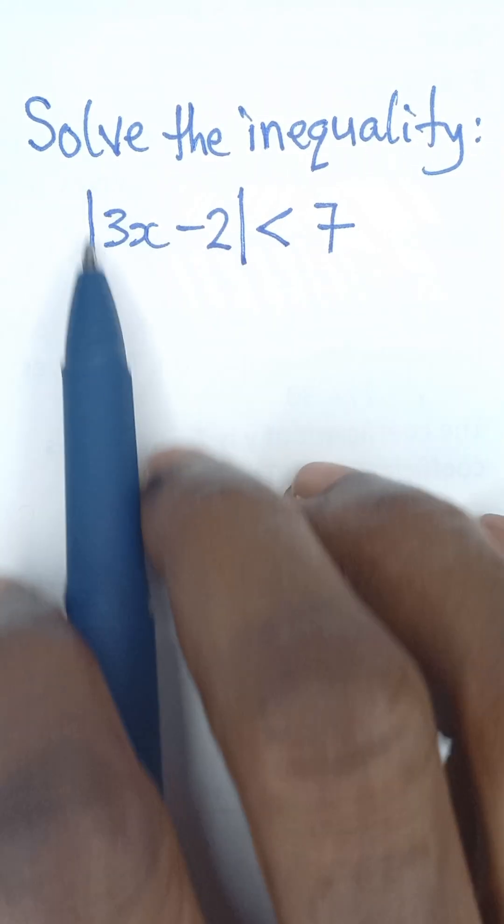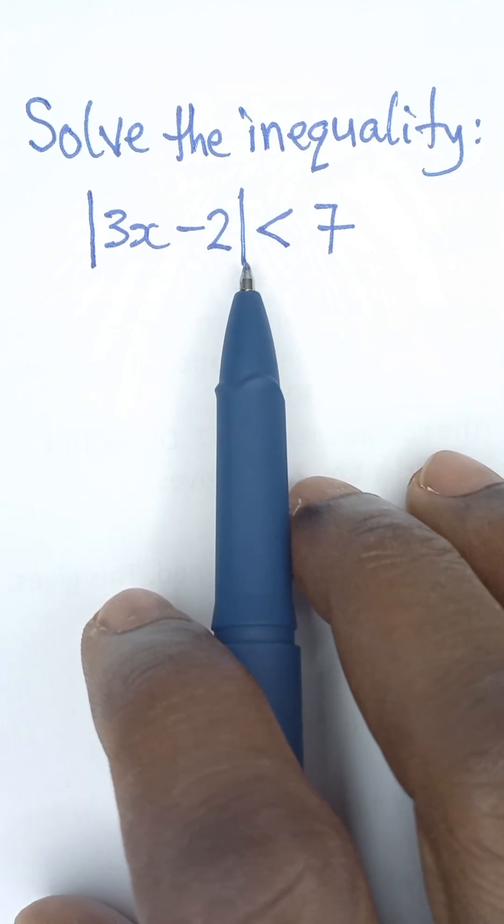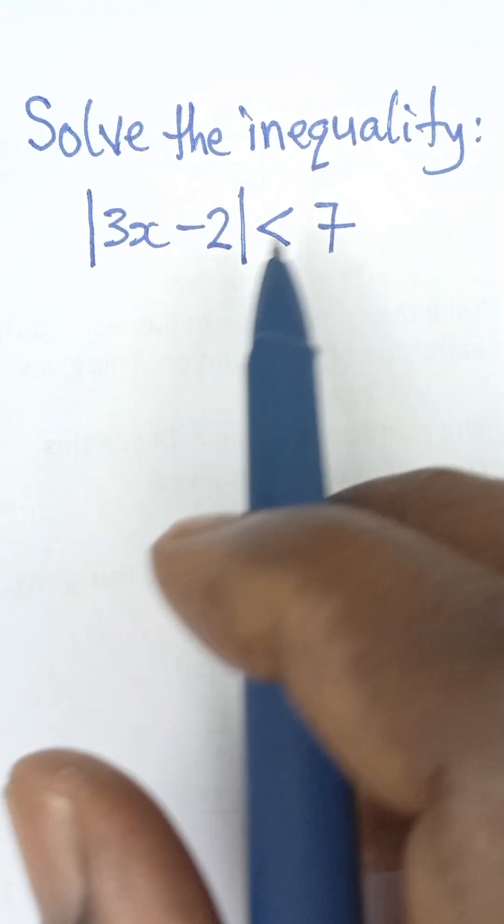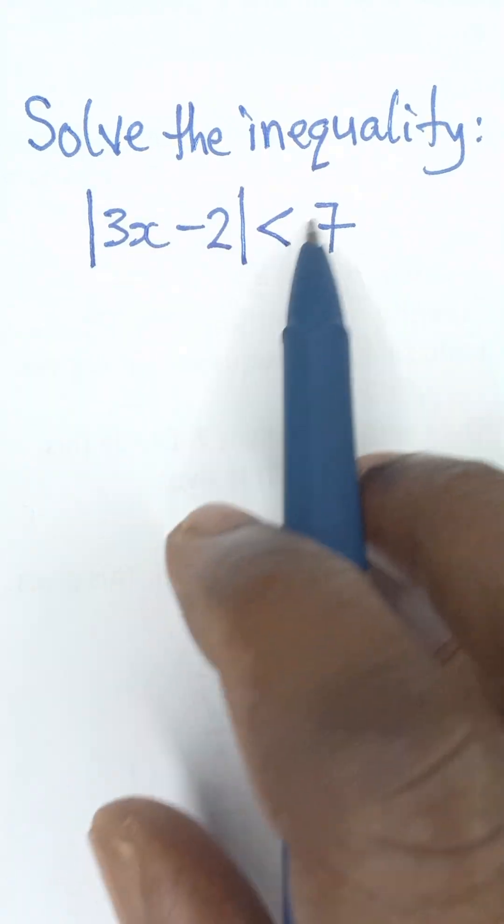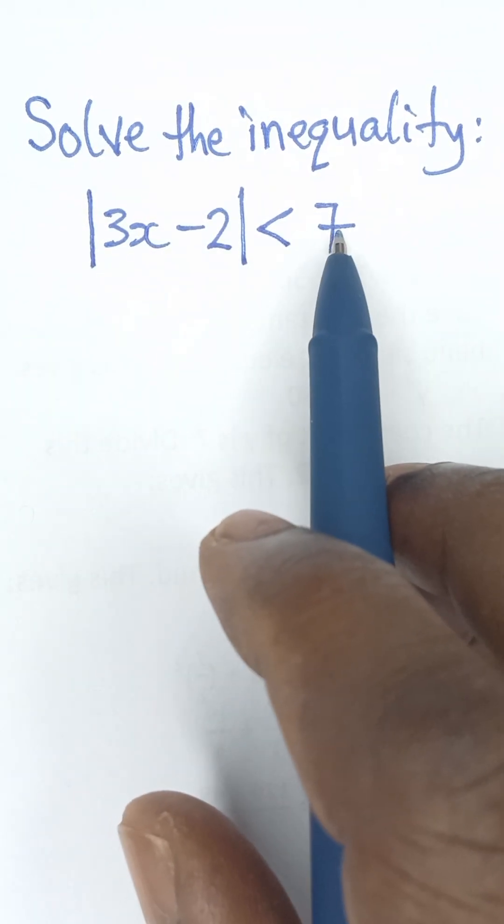Now for us to remove this absolute value sign, what we need to do is to simply introduce this same sign on this side and assign a negative value to 7.